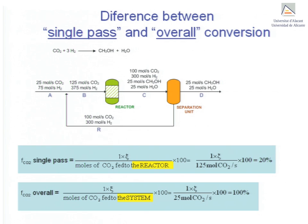Let's look at the results for the present example. The extent of reaction is 25 moles per second. Therefore, the single-pass conversion is 20%, but the overall conversion comes to 100%. The reactor converts 20% of the CO2 fed to it, so 80% remains unreacted. Since the system contains a separation unit after the reactor that separates reactants from products, any unreacted CO2 and H2 are recycled back to the reactor. Since no reactant leaves the system, the overall conversion is 100%.